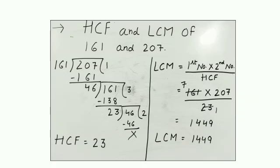Problem number 1: HCF and LCM of 161 and 207. First of all, we will find HCF of 161 and 207. 207 is the bigger number so we will put it inside and 161 will be outside. 161 goes into 207 once, 7 minus 1 is 6 and 10 minus 6 is 4.